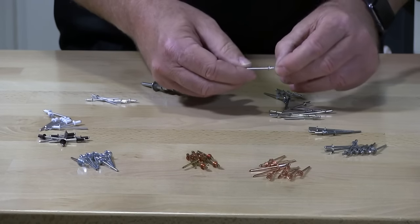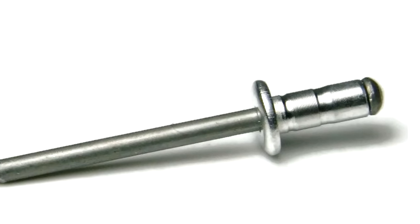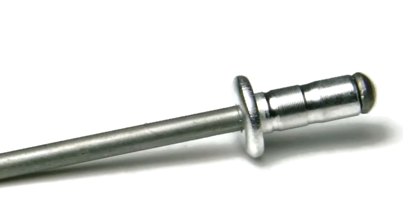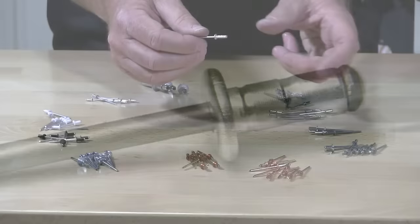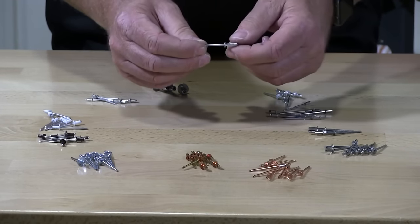And then we have what we call multi-grip rivets. With multi-grip they're based upon increments of two. So a multi-grip will go from 42, 44, and 46. So it'll cover three different lengths and that's why they call them multi-grip rivets.